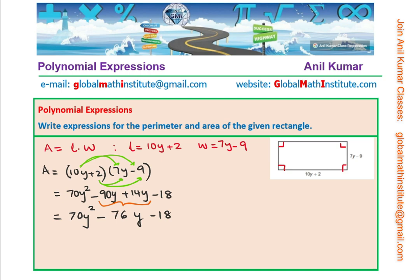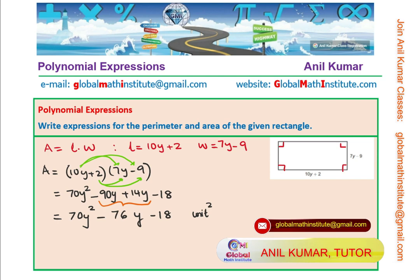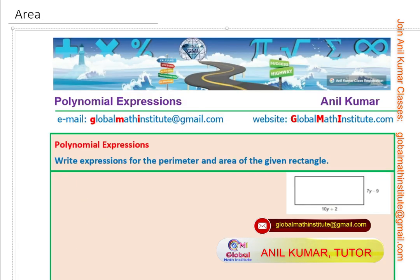So, that becomes the expression for area: 70y squared minus 76y minus 18. Of course, units will be unit square. So, I hope the steps are clear. Now, let's find the perimeter for the same.